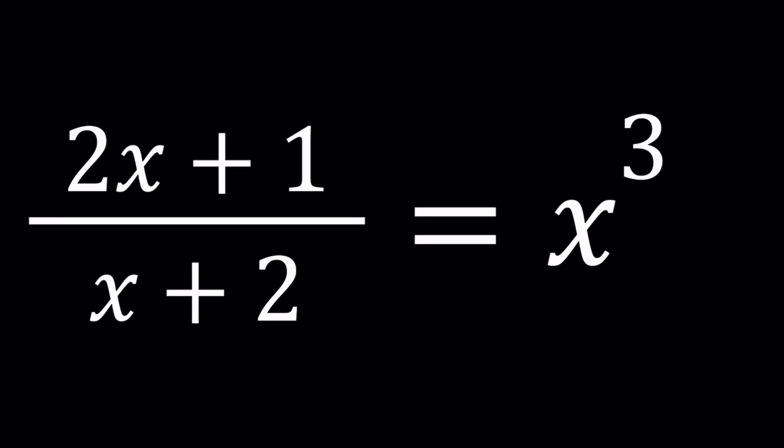Hello everyone. In this video, we're going to be solving a nice rational equation. We have 2x plus 1 divided by x plus 2 equals x cubed, and we're going to be solving for x values. Are there any solutions? You could probably do a little bit of guess and check, but we need to make sure we find all the solutions. I'll be presenting two methods, and let's start with the first one.